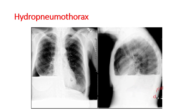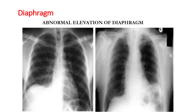Diaphragmatic eventration refers to abnormal elevation of the diaphragm, which may be due to lung collapse or hepatomegaly.